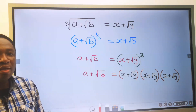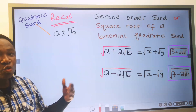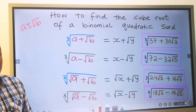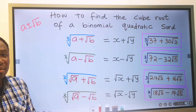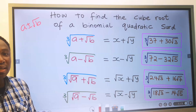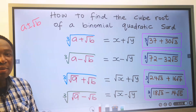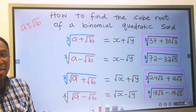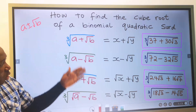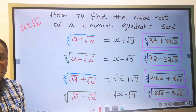Now that you have understood the basic concepts in the square root and cube root of binomial quadratic surds, in the next session we are going to take some questions and you will learn the step-by-step method of getting to the final answer in any of the conditions. I hope this was helpful.